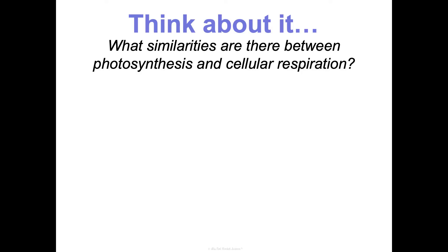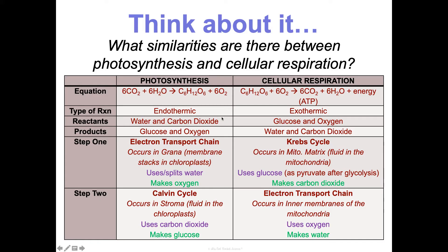There are so many similarities between photosynthesis and cellular respiration. Overall, photosynthesis is endothermic — we're taking in energy — while cellular respiration is exothermic — we're releasing energy. Notice the opposite equations: the reactants of photosynthesis are the products of cellular respiration and vice versa. The ETC in photosynthesis splits water and makes oxygen; in cellular respiration it uses oxygen and makes water. The Calvin cycle uses CO2 and makes glucose; the Krebs cycle uses glucose and makes CO2.